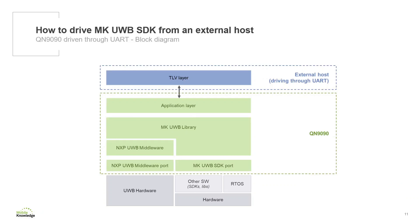In this figure, we can see which software block is running on which platform. The external host is only handling the TLBs, which we will explain in further detail in the next module, while the MK UltraWideBand SDK and the MK UltraWideBand library are running on the QN1990.